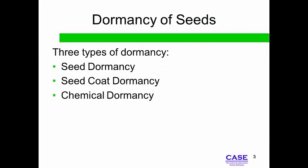There are three types of dormancy based on the requirements needed to overcome the state of dormancy: Seed Dormancy, Seed Coat Dormancy, and Chemical Dormancy.